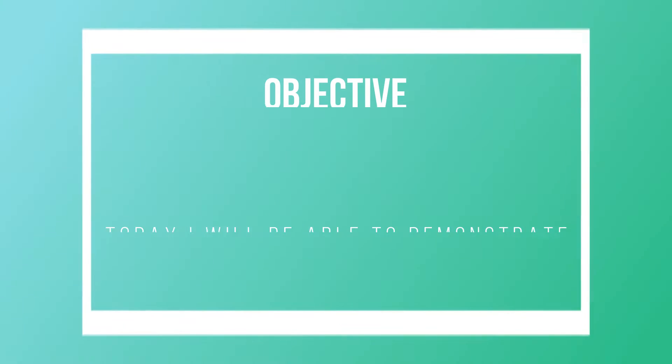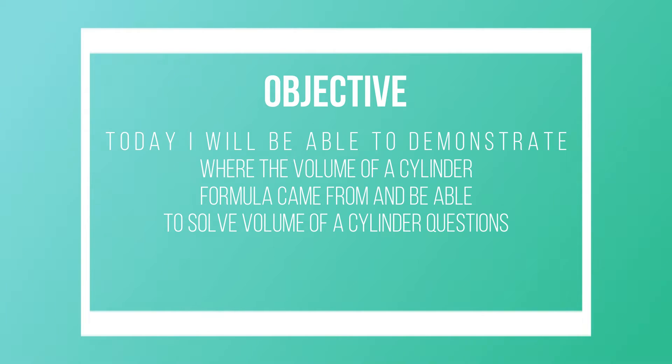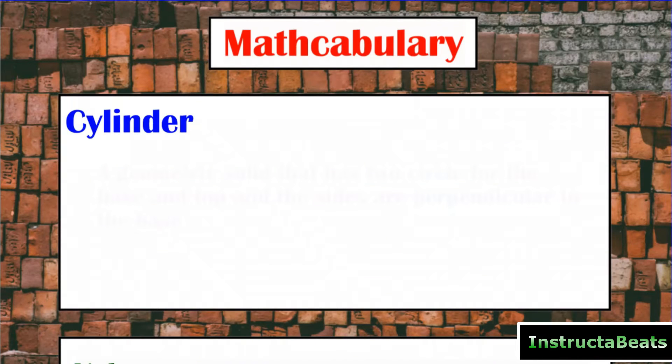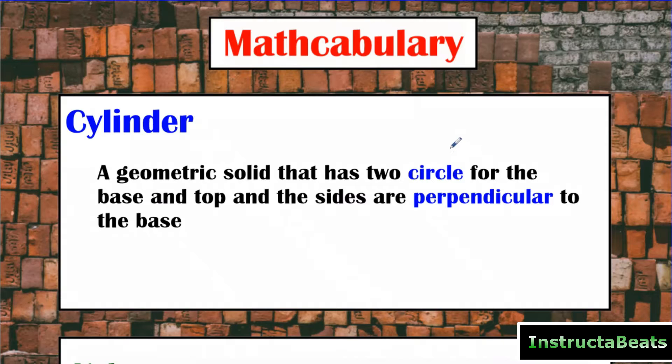Our objective today, I will be able to demonstrate where the volume of a cylinder formula came from and be able to solve volume of a cylinder questions. So before we do that, we should probably take a look at what a cylinder is. A cylinder is a geometric solid that has two circles for the base and top, and then the sides are perpendicular to the base.